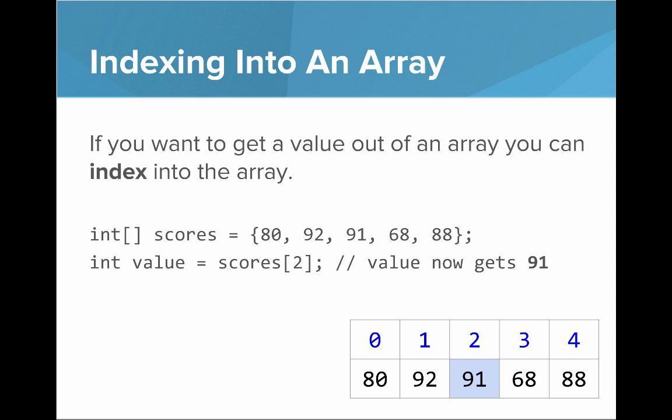So two refers to the index, index two. It's the third position, because we start at zero. That's why we're showing the indices here—it's important to remember that arrays start at zero.